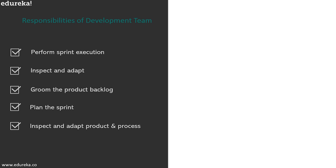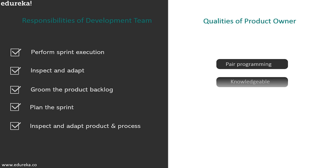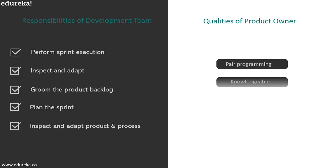The core responsibilities of the development team include: performing sprint execution by interacting with team members, the product owner, and Scrum master; inspecting and adapting by taking feedback from customers and stakeholders to improve the product; grooming the product backlog alongside the product owner; and planning the entire sprint — deciding what should be done and how to achieve the sprint goal. Key qualities include being a team player, self-motivated, knowledgeable, and capable of effective pair programming.